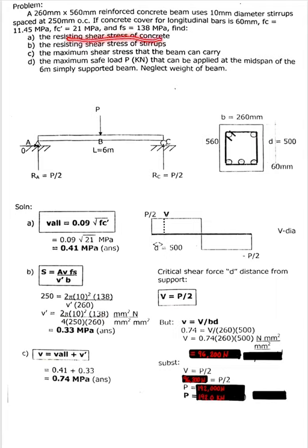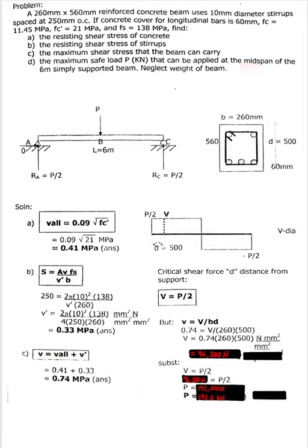And fs is 138 MPa. Find: letter A, the resisting shear stress of concrete; letter B, the resisting shear stress of stirrups; letter C, the maximum shear stress that the beam can carry; and letter D, the maximum safe load P that can be applied at the mid-span of a six-meter simply supported beam.